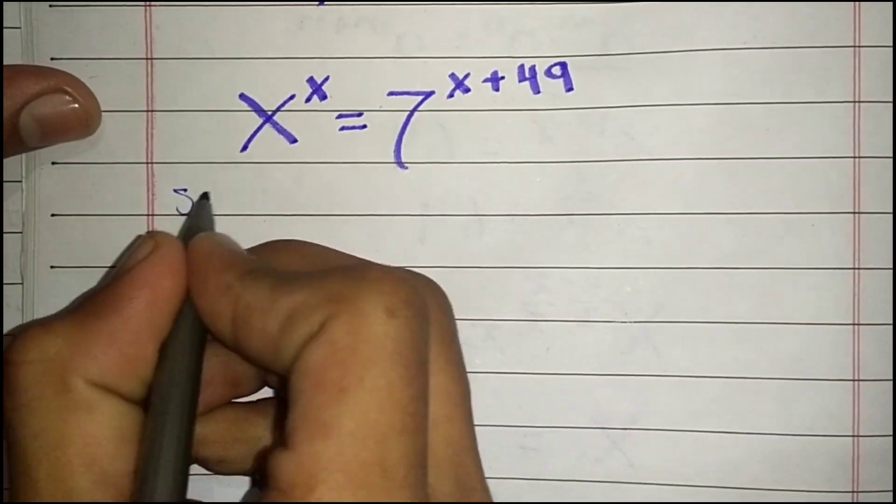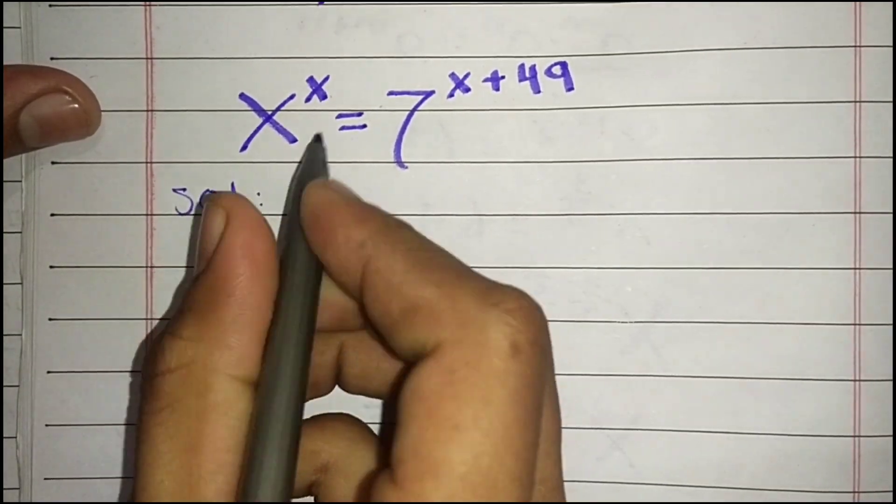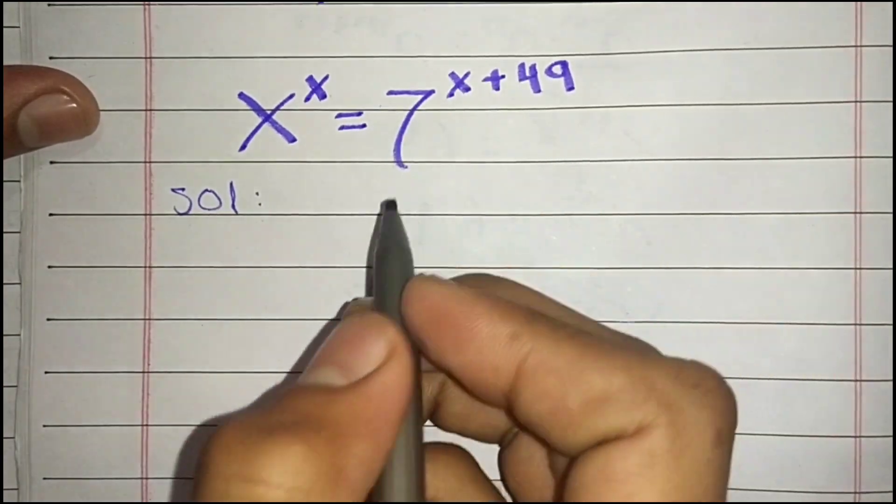In this video we are going to solve this interesting math equation. We have x^x = 7^(x+49).